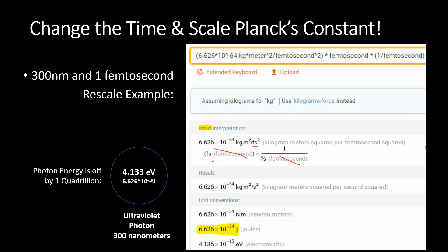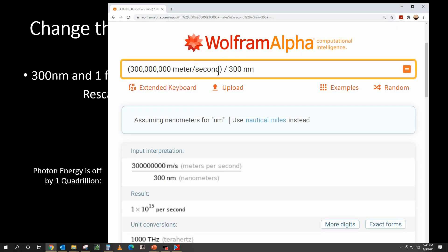You can see when you run this calculation that the photon energy is off by one quadrillion. Why is it off by one quadrillion? Because you have the speed of light per second divided by this 300 nanometer wavelength, and that is equal to 1000 terahertz or one petahertz. This is a factor of one quadrillion, and it's directly related to the per second value of the speed of light.